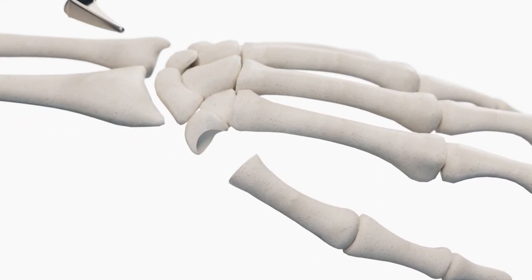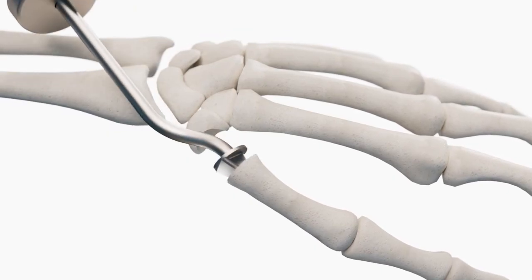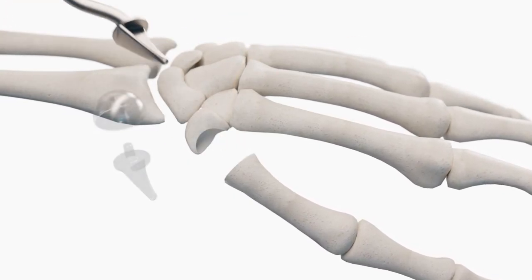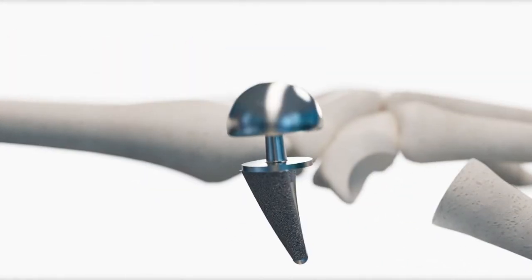Then a brooch is inserted into the metacarpal for the implant stem. Finally, an implant head and stem are sized to your joint and assembled.